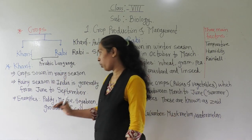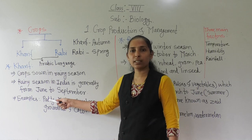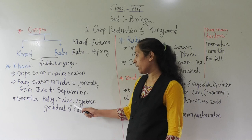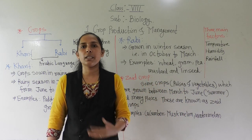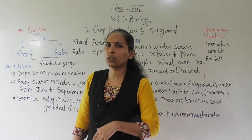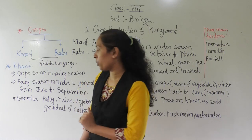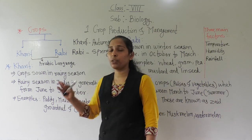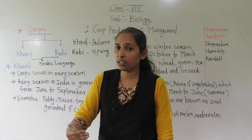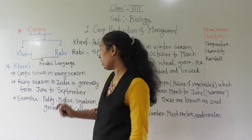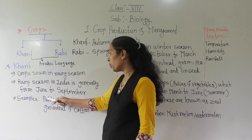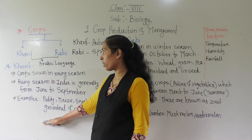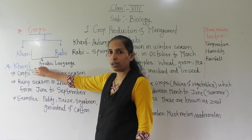Examples of kharif crops are paddy (that is rice), maize, soyabean, groundnut, and cotton. There are many other examples also present. These are certain examples of kharif crops which we grow during the rainy season, from June to September. This is the first type of crop — kharif crops.